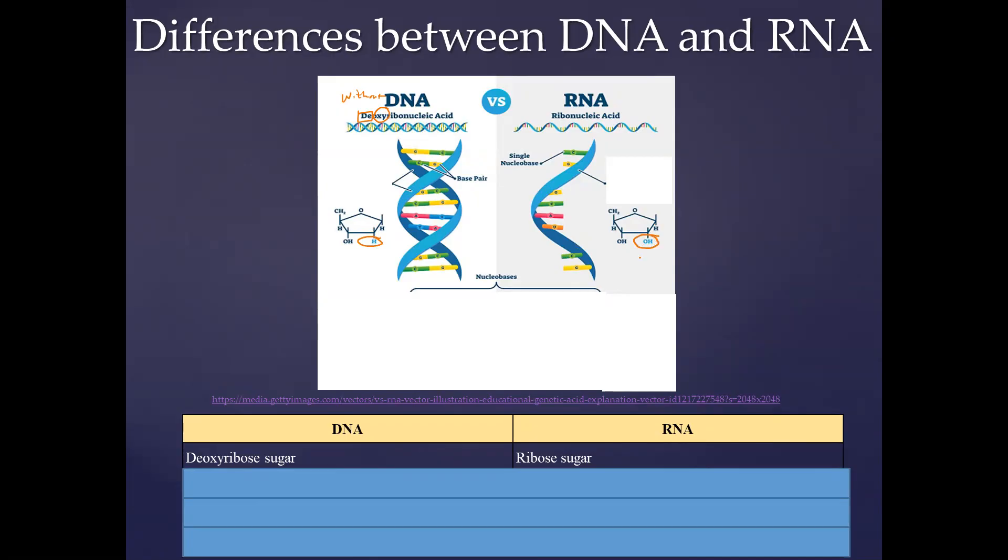If we compare the two, we find that the DNA is short in oxygen. Therefore, we'll say that DNA has a deoxyribose sugar, whereas RNA has a ribose sugar. So from the name itself, we can get one difference between the two molecules.